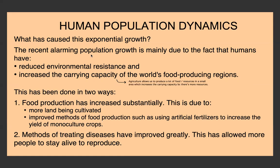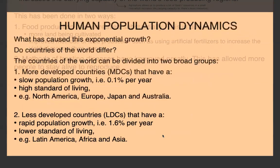The other way humans have allowed this exponential population growth — reducing environmental resistance and increasing carrying capacity — is that we've greatly improved the methods of treating disease: medication, sanitation, etc., which has allowed more people to stay alive and therefore more reproduction to occur.